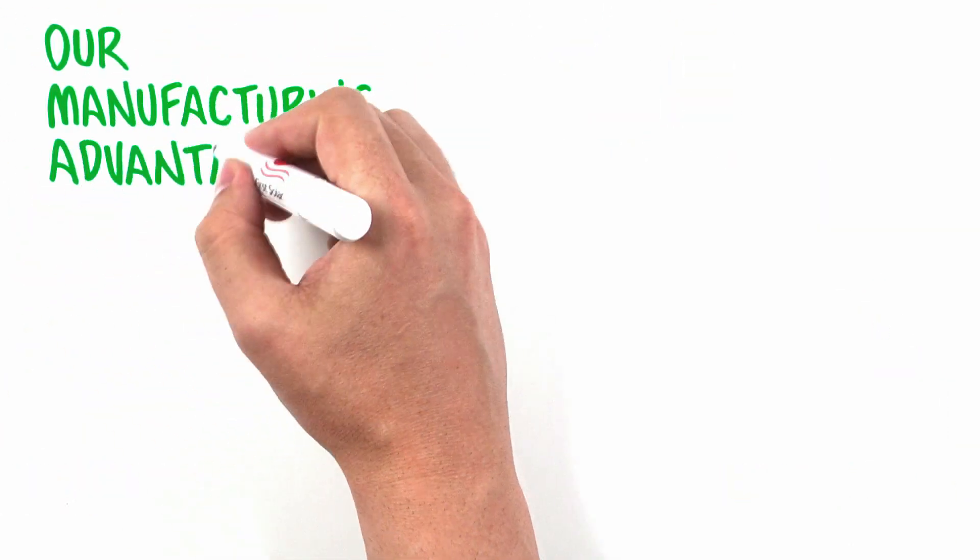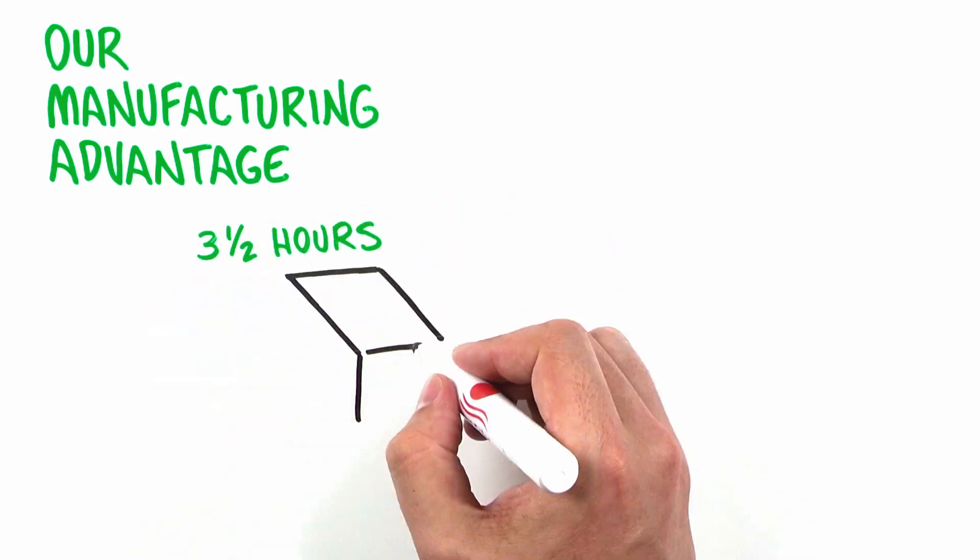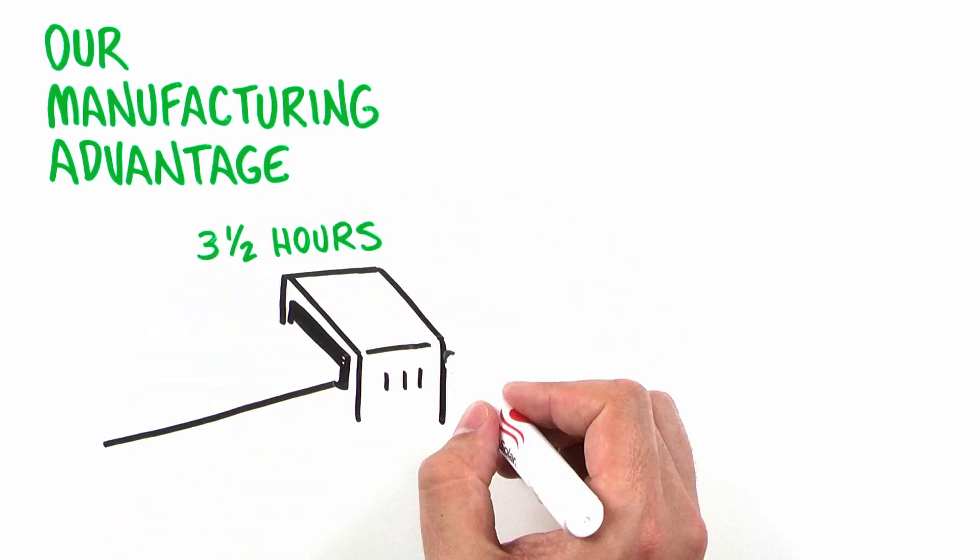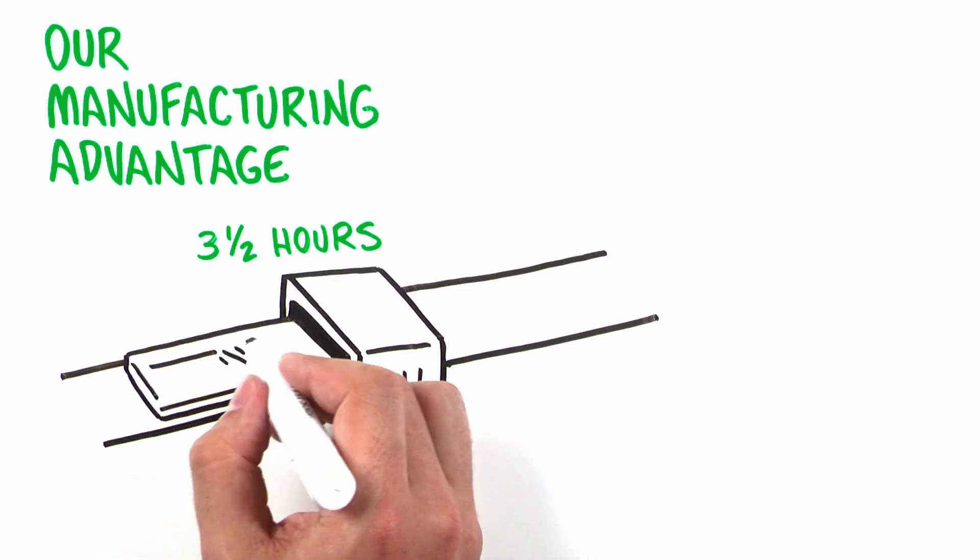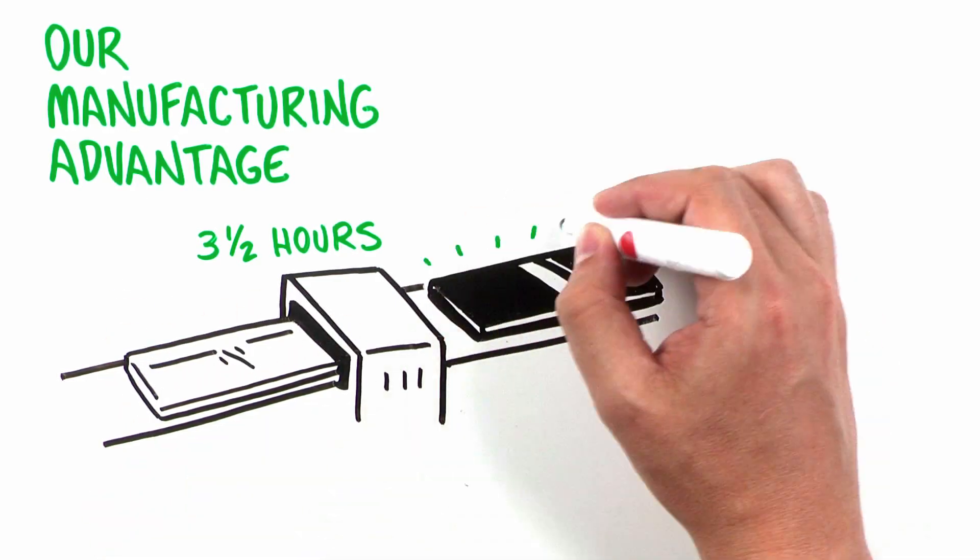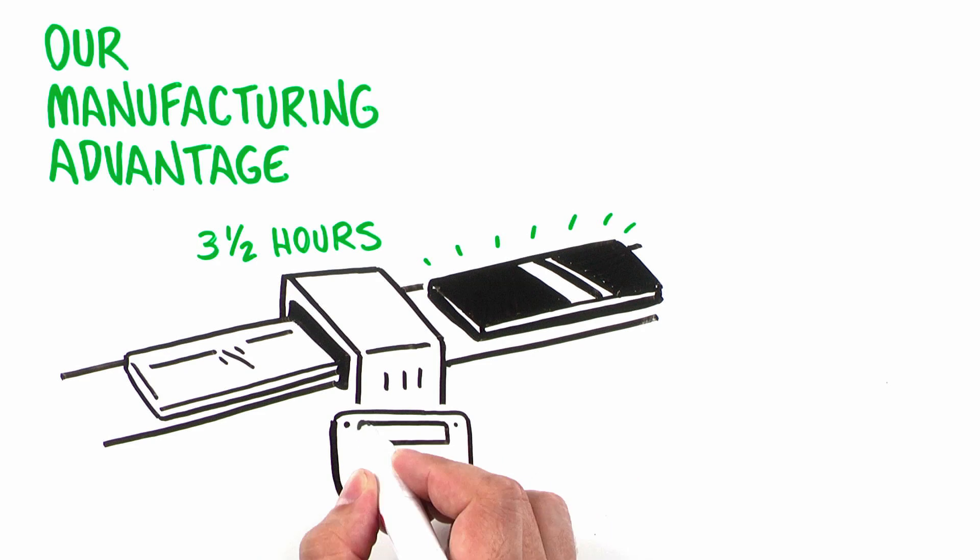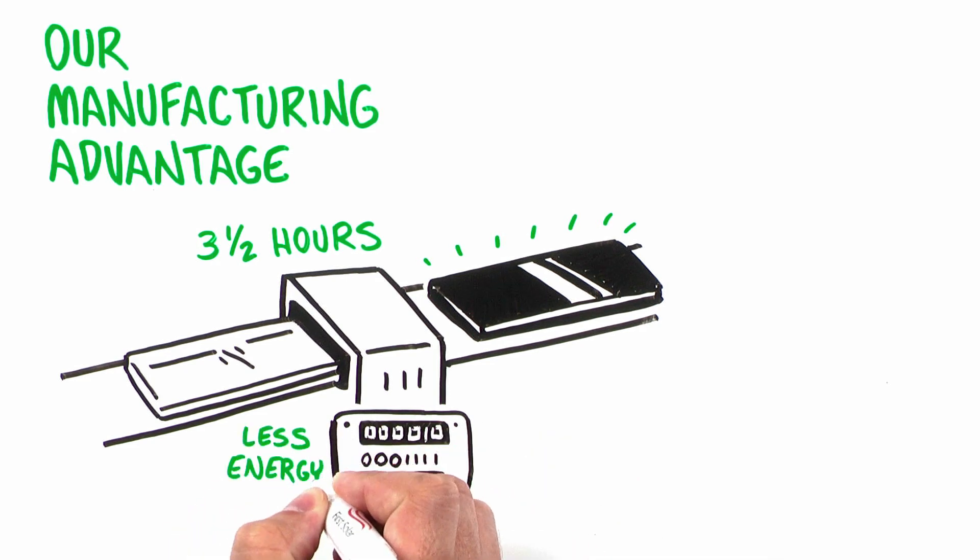Our manufacturing advantage. In less than three and a half hours, First Solar's state-of-the-art manufacturing process transforms a sheet of glass into a completed solar module. That means we can produce a high volume of products using less energy and fewer resources than other photovoltaic modules.